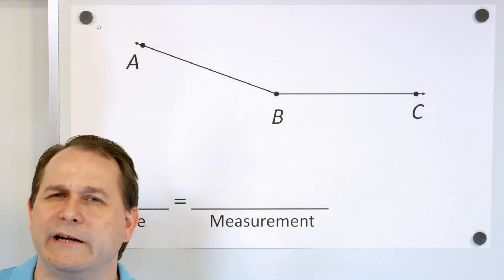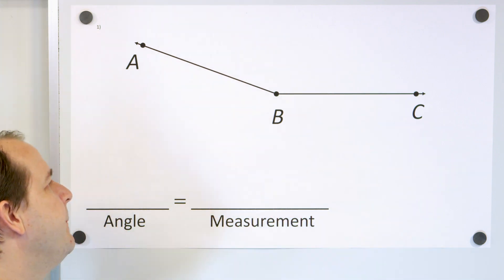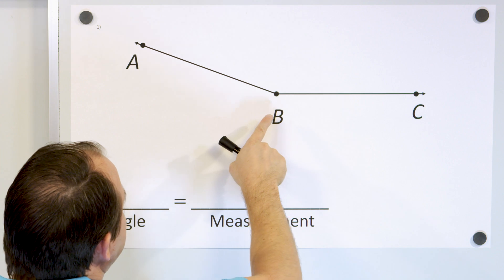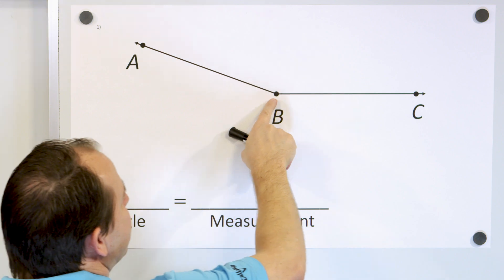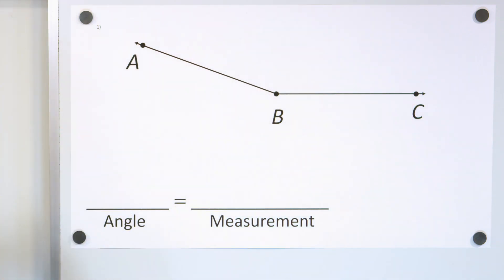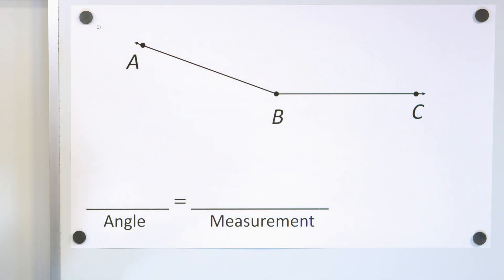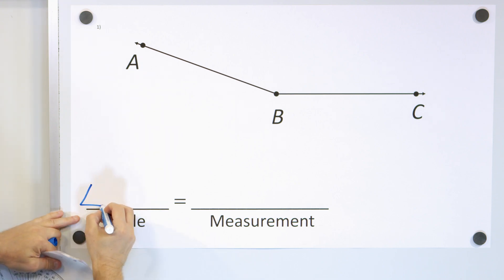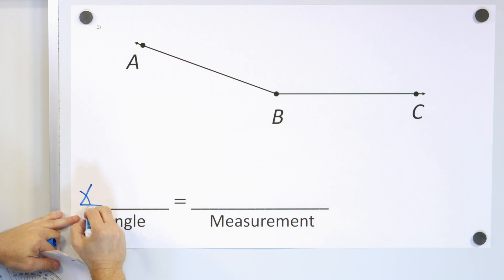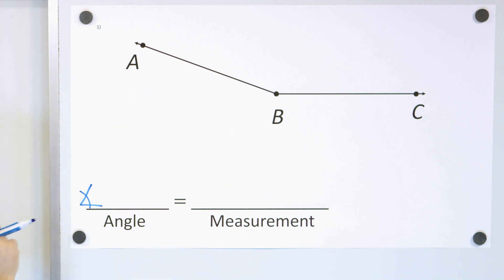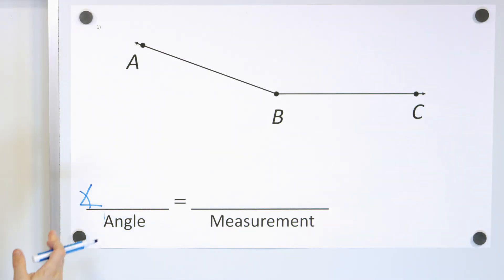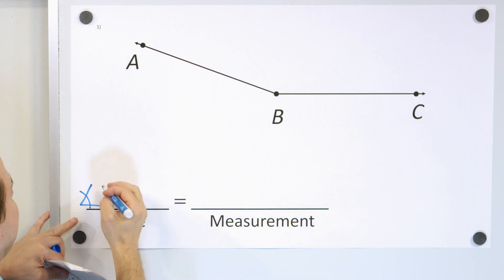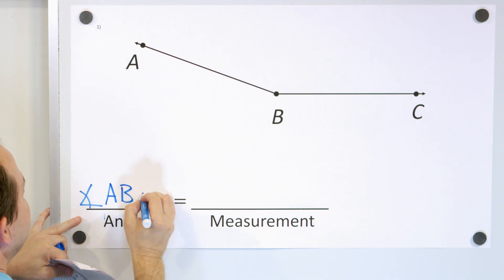Now that you know what we're doing, we're going to take a look at an angle and measure it. Here is an angle. I have labeled it with the letter B in the center — we call it the vertex. We have the letter C at one dot and the letter A here. Here's how we're going to name an angle: we write this little angle symbol, which means angle, and the name of this angle is called angle A, B, C.